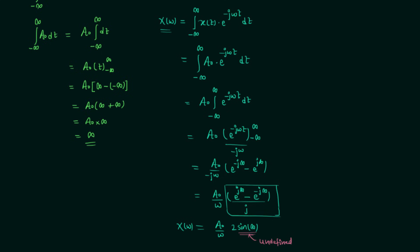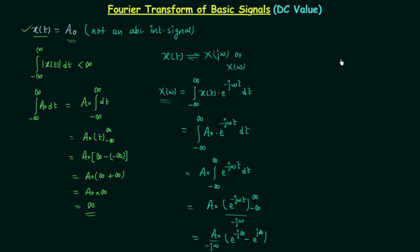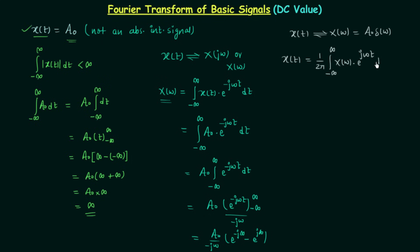Let's understand the correct process to calculate the Fourier transform of DC value A0. We consider a time domain signal x(t) having the Fourier transform equal to A0 times delta(ω). From the inverse Fourier transform formula, x(t) equals 1 over 2π times the integral from minus infinity to infinity of X(ω) times e to the power jωt dω. Substituting X(ω) equal to A0 delta(ω), the signal x(t) equals 1 over 2π times the integral of A0 delta(ω) times e to the power jωt dω.